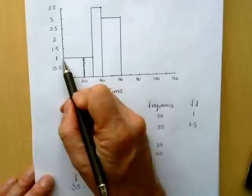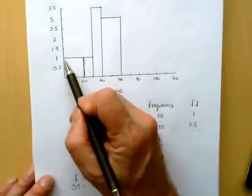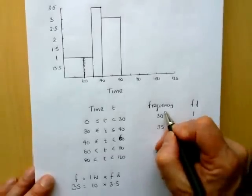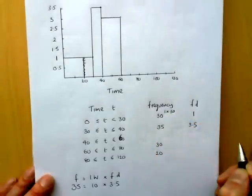The frequency density is 1. You can see it reads off 1 there. 1 times the interval width of 30 gives me 30.